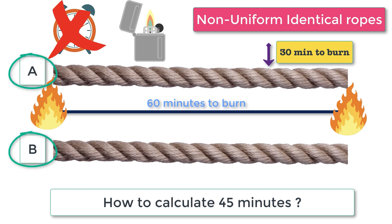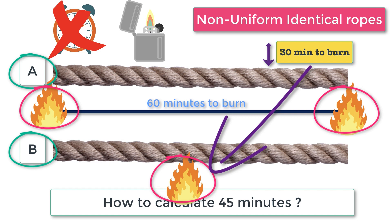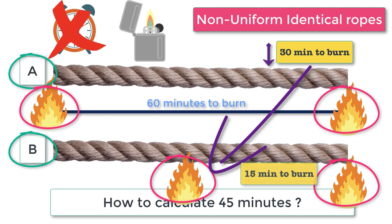Call the ropes A and B. First, burn rope A from both ends and rope B from one end. Rope A will completely burn in 30 minutes. When rope A is burnt completely, 30 minutes have passed. Rope B has also been burning for 30 minutes, meaning the remaining portion of rope B will burn in another 30 minutes. At this point, light the other end of rope B as well. It will take another 15 minutes for rope B to burn completely — giving you a total of 45 minutes.